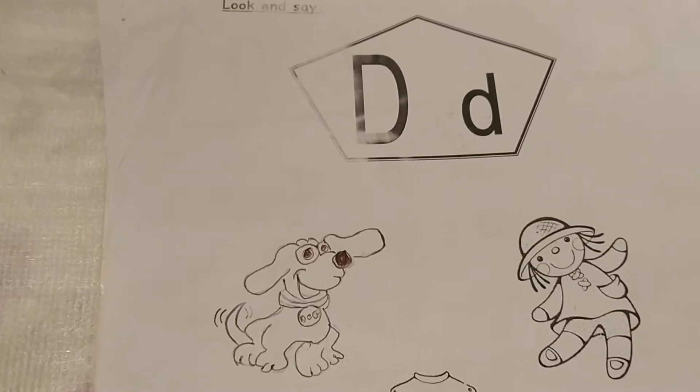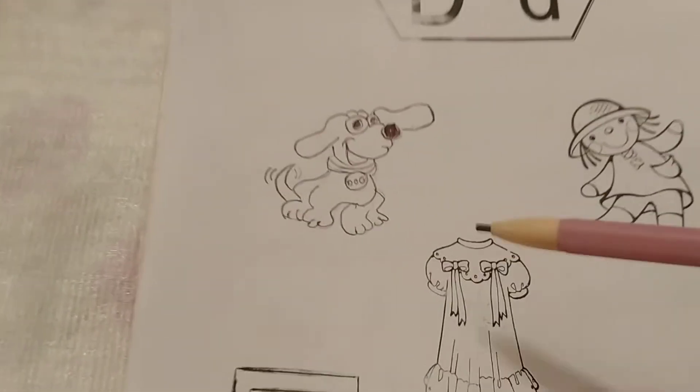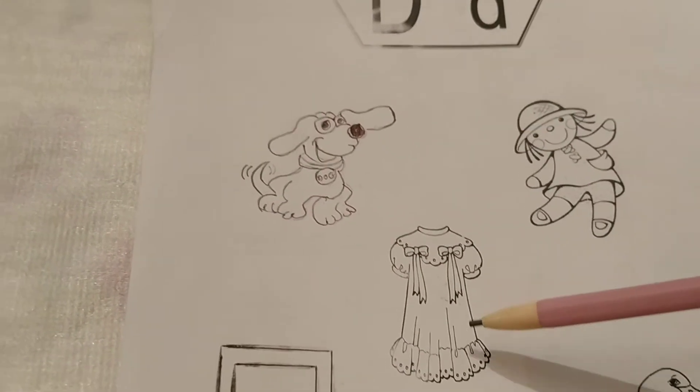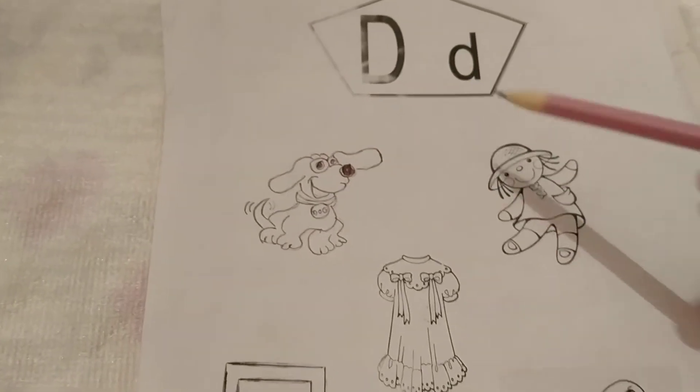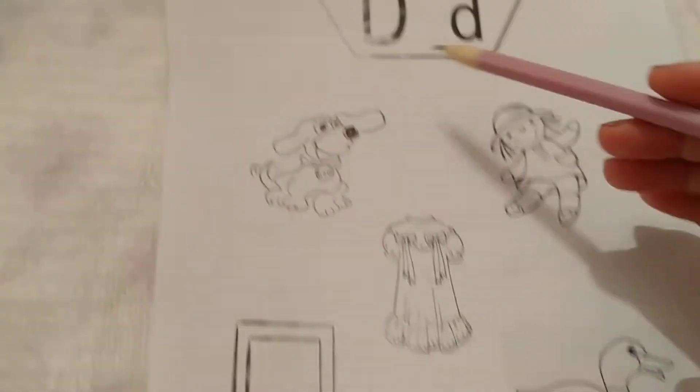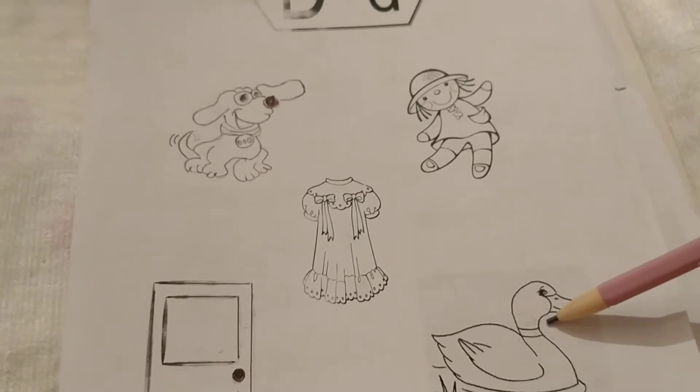The sound of letter D is dah. Dah, dog. Dah, dress. Dah, doll. Dah, door. Dah, duck.